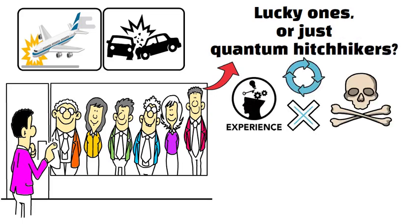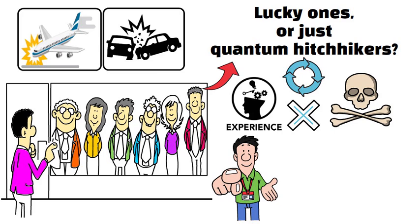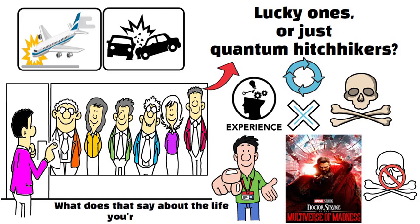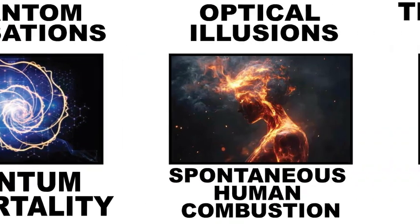With quantum immortality, you'd never experience your own demise. Instead, you just keep jumping to the next scene in the multiverse movie where you're still the star. But here's the existential kicker. If you never truly die, what does that say about the life you're living?